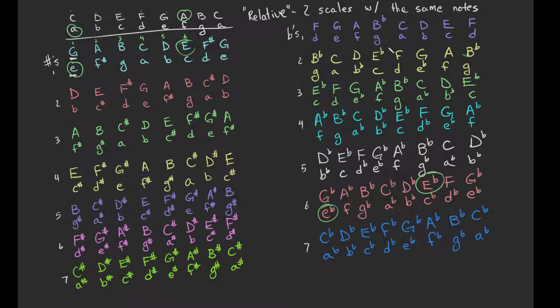One more: B flat major will be G minor, because one, two, three, four, five, six — G. So B flat major's relative minor is G minor. Super simple.